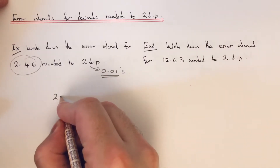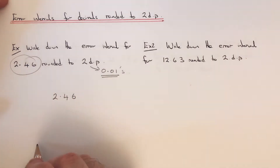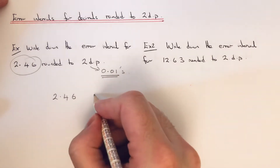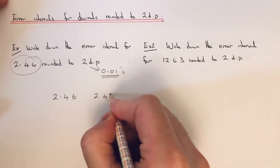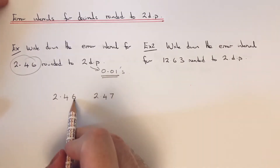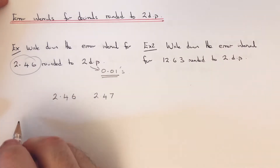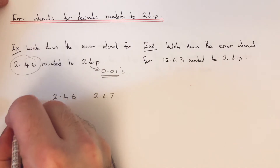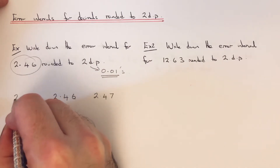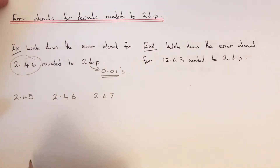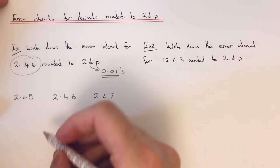I'm going to put 2.46 down on our page. The number above 2.46 on the scale will be 2.47 — you just add one onto this last digit. And the number before 2.46 on our scale will be 2.45.